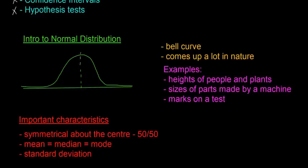So some of the important characteristics of the normal distribution: it's symmetrical about the center, so 50-50, so 50% of the area is on this side and 50% of the area is on this side. So remember the area coincides with the data. The mean, the median, and the mode all coincide. So they're all at the very center here on this dotted green line.